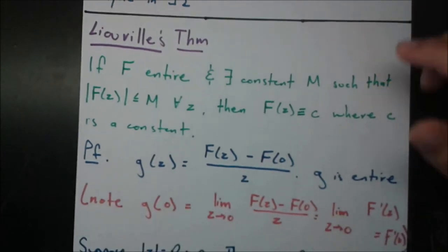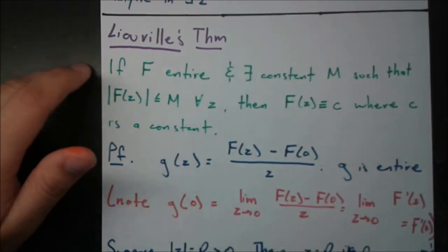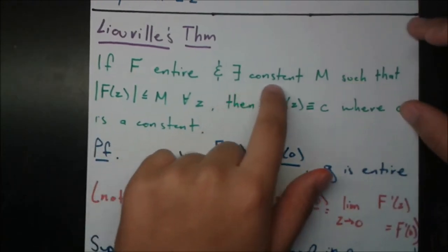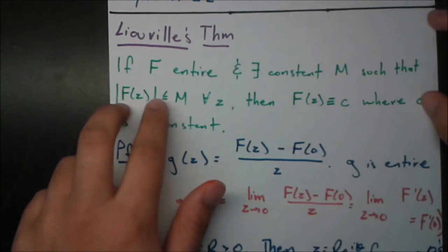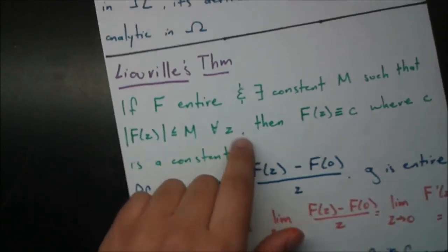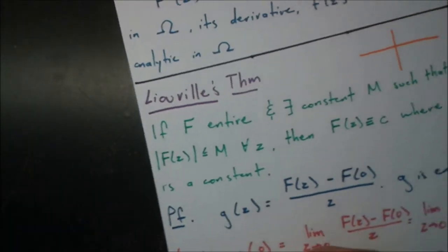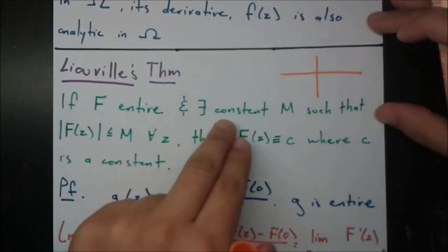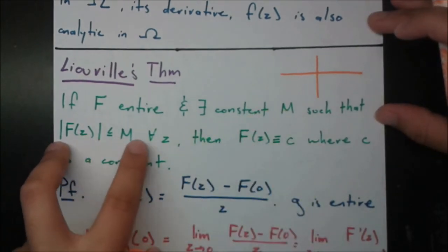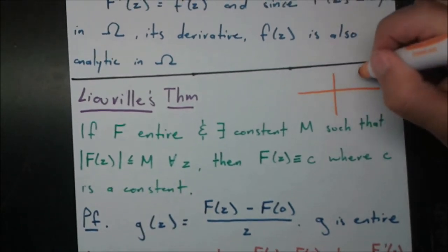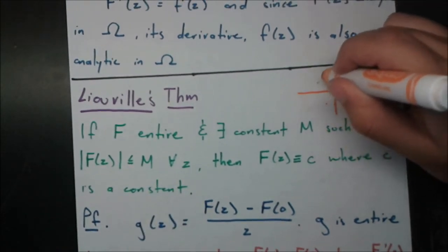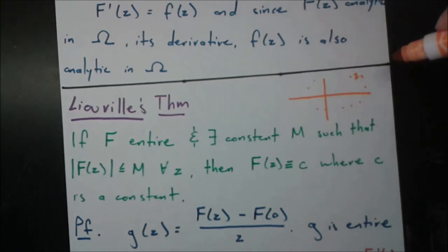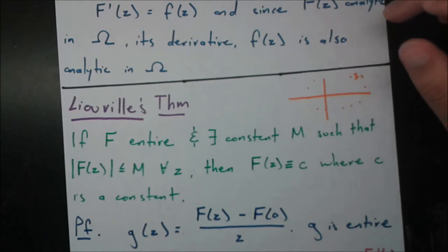The last theorem we'll talk about is Liouville's theorem. This is a pretty profound theorem. It says that if f is entire — meaning analytic on the entire complex plane — and there exists a constant M such that the modulus of f(z) is always less than or equal to M for all z, then you can evaluate f at any point z₁ and the modulus will always be less than or equal to that constant M.